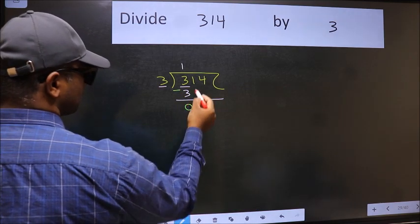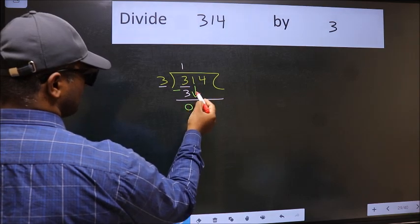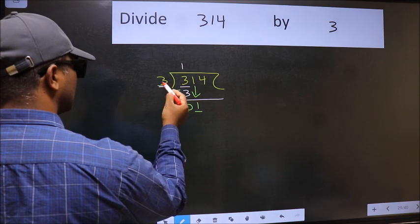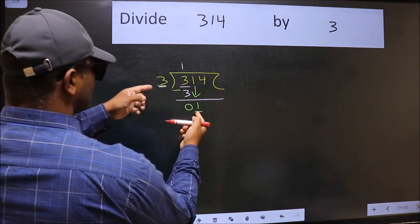After this, bring down the beside number. So 1 down. Now here we have 1 and here 3. 1 is smaller than 3.